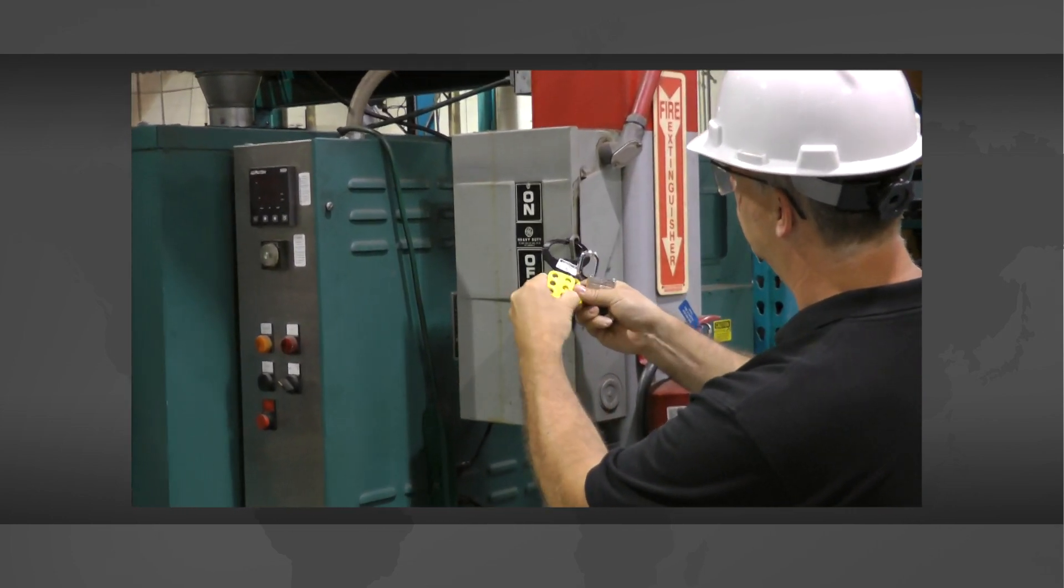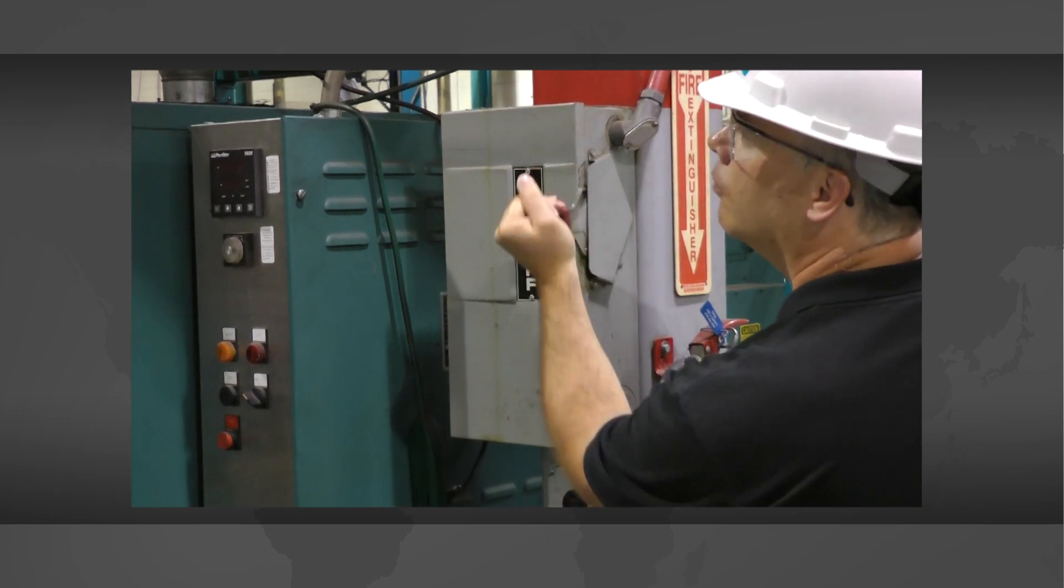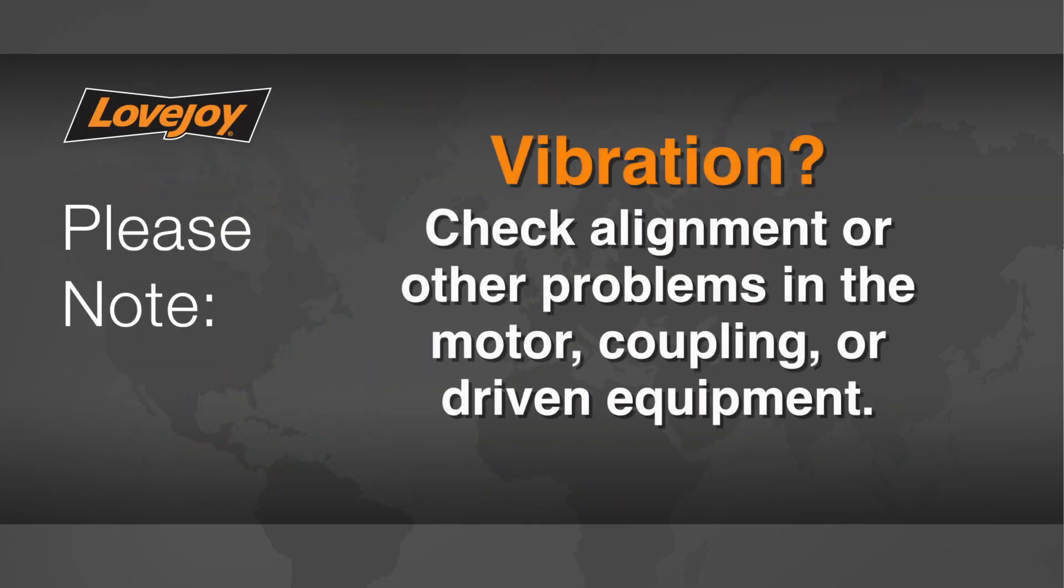The equipment can then be started up and tested. The coupling and equipment should run smoothly. If vibration is detected, it could indicate that there is an issue with alignment or other problems. These could exist in the motor, coupling, or driven equipment, and should be resolved prior to placing this coupling into operation.